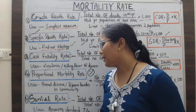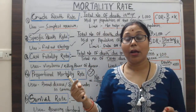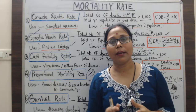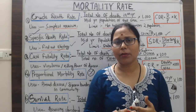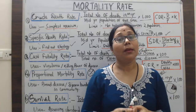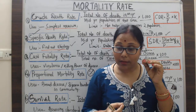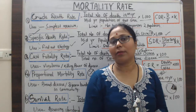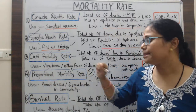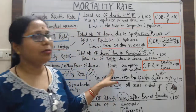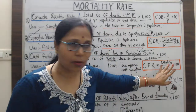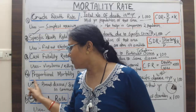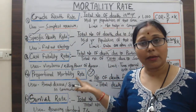The case fatality rate is useful for finding the virulence or killing power of a disease. For example, during a cholera outbreak, many people are affected but only some die — the CFR measures that severity. One limitation is that the time interval is not specified in this rate, which is a notable drawback.